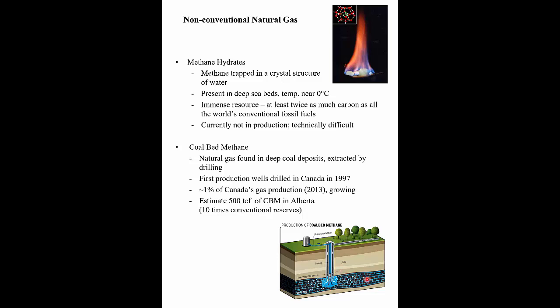The coal being targeted for coal bed methane may be too deep to mine conventionally — too much overburden. There is a huge resource of coal bed methane in Canada, about 10 times the conventional natural gas resource, and Canada has big natural gas reserves as well. This is another non-conventional reserve of natural gas that could be exploited over time if the price went up enough.